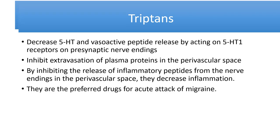Triptans are the preferred drug for the acute attack of migraine. They decrease serotonin and vasoactive peptide release by acting on presynaptic 5-HT autoreceptors on nerve endings, inhibiting the release of serotonin.